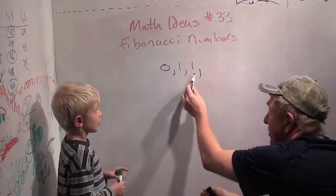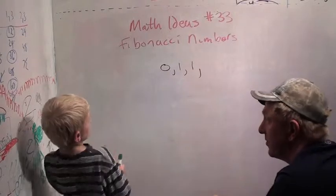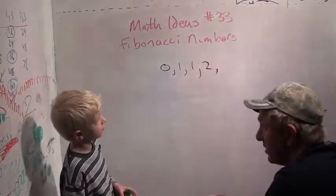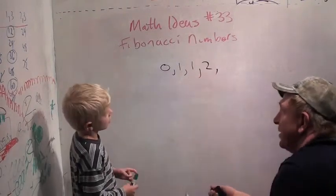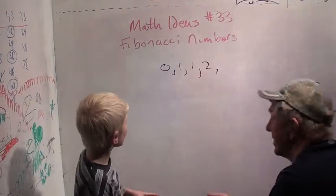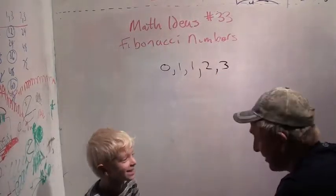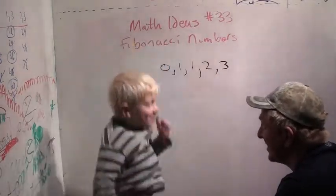Okay. Now the next number, the previous two numbers are one and one. So one plus one is? Two. Now the next number is the sum of these two. Two plus one. Two plus one is? Three. Because two plus one is? Three.